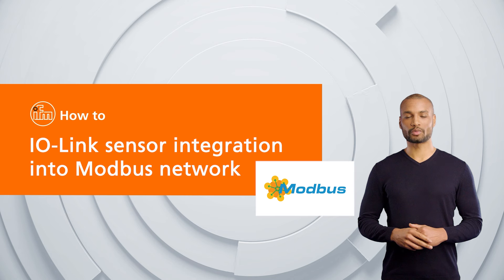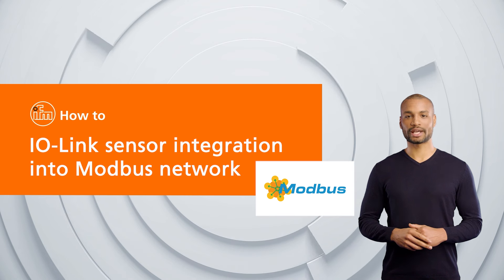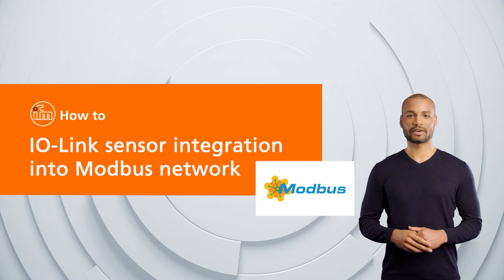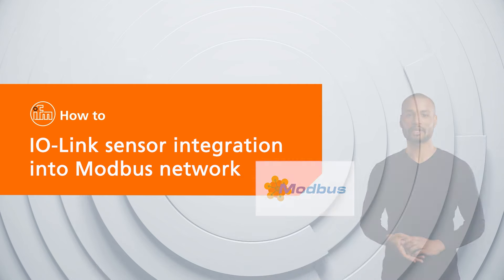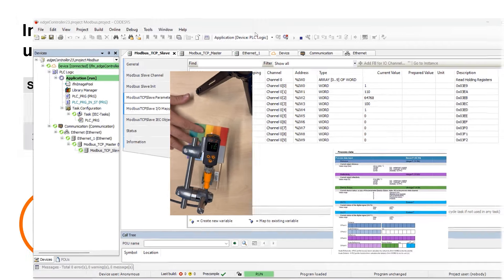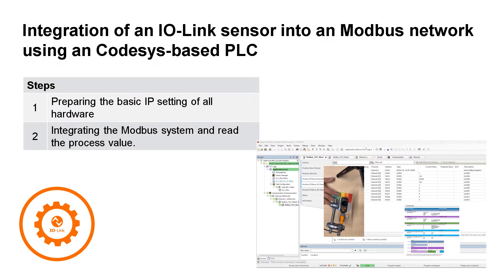Welcome to this how-to video. We will show you how to integrate an IO-Link sensor with a Modbus capable PLC using CodeSys 3.5. The presentation will show every step necessary to read the process value of the shown photoelectric distance sensor. The first step describes how to prepare the basic IP settings of all hardware, and in the second step, we will integrate the Modbus system and read the process value.